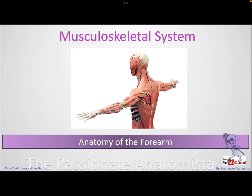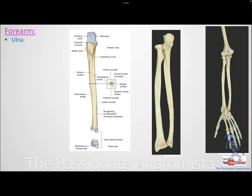In this video we're going to talk about the anatomy of the forearm. The forearm is composed of two bones: the ulna, which is near to our body — the medial bone — and the radius, which is far from our body — the lateral bone. We already know the proximal part of the ulna and its features.